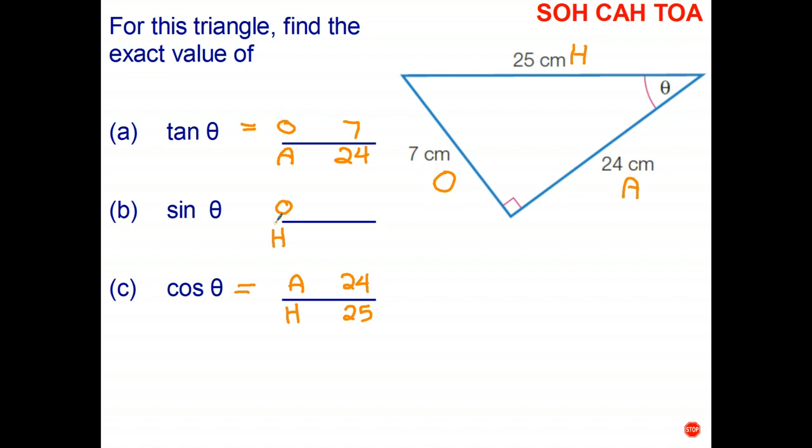The opposite side is 7, the hypotenuse is 25. And I'll put the equal sign in, and there we go. So if you know the three sides of a right angle triangle, you can write down the exact value of the sine, cosine, and tangent of the angle of interest.